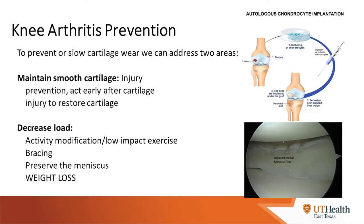To slow or arrest cartilage wear: maintain smooth cartilage by restoring cartilage defects in a timely fashion, decrease the load through bracing to offload the diseased area, preserve the meniscus to decrease load by expanding surface area, and maintain a healthy weight. A study shows that 10 pounds of weight loss takes about 40 pounds of load off the knee — at 220 pounds, every step on level ground places 880 pounds on the knee. Even small weight changes have a large multiplicative effect on knee load and arthritis symptoms.